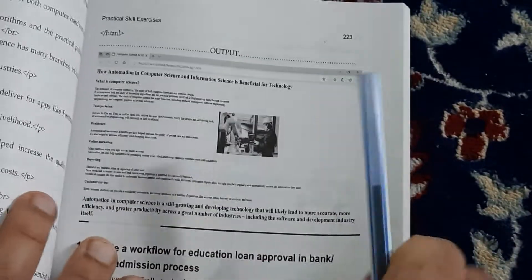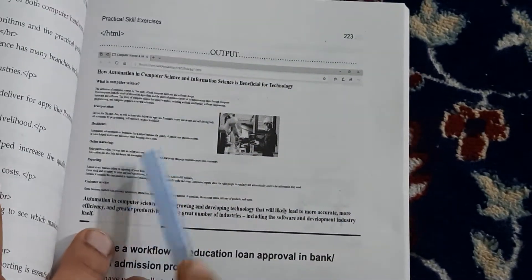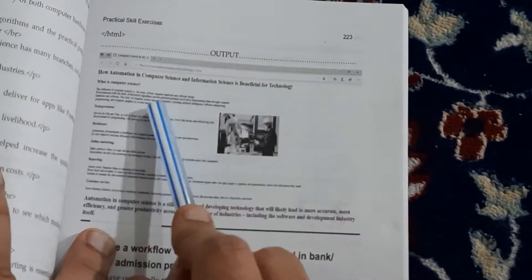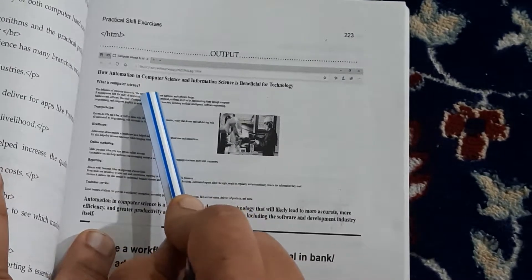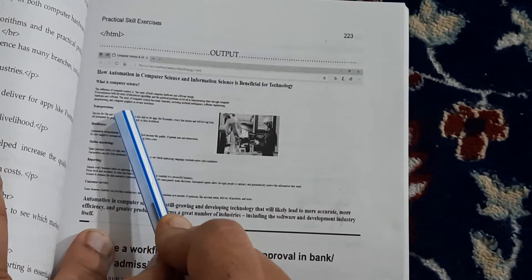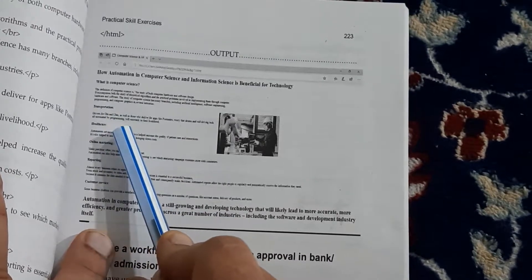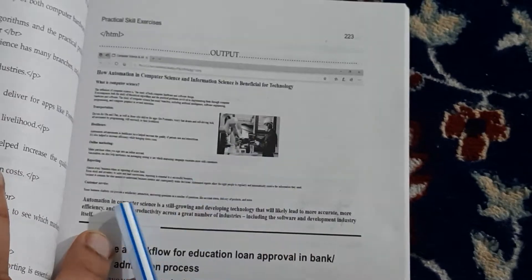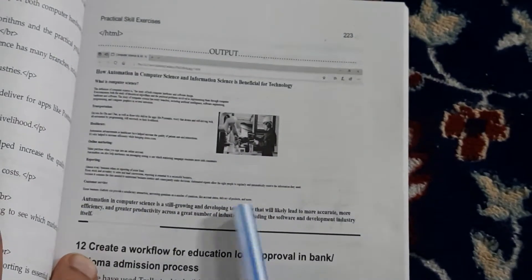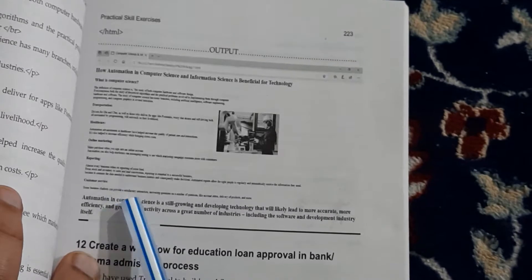This is the output that you'll get. We have a heading here, and then these are the headings, a small heading, and then the contents, that is a paragraph. Then again you have a heading with details, again a heading with some details, some heading some details, and then you have an image here.